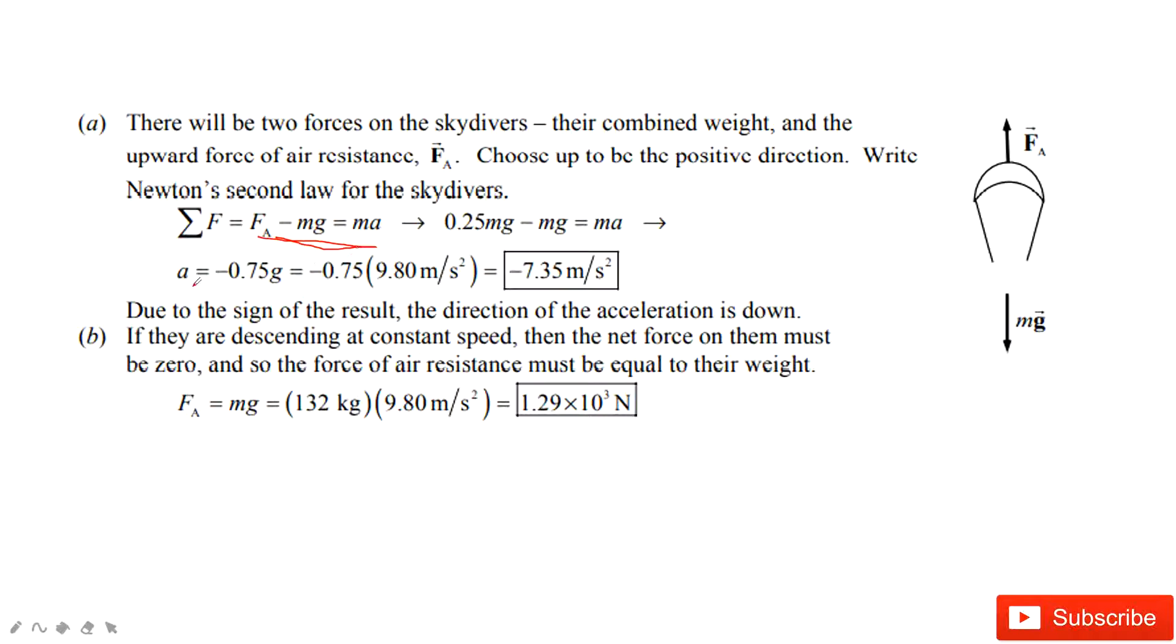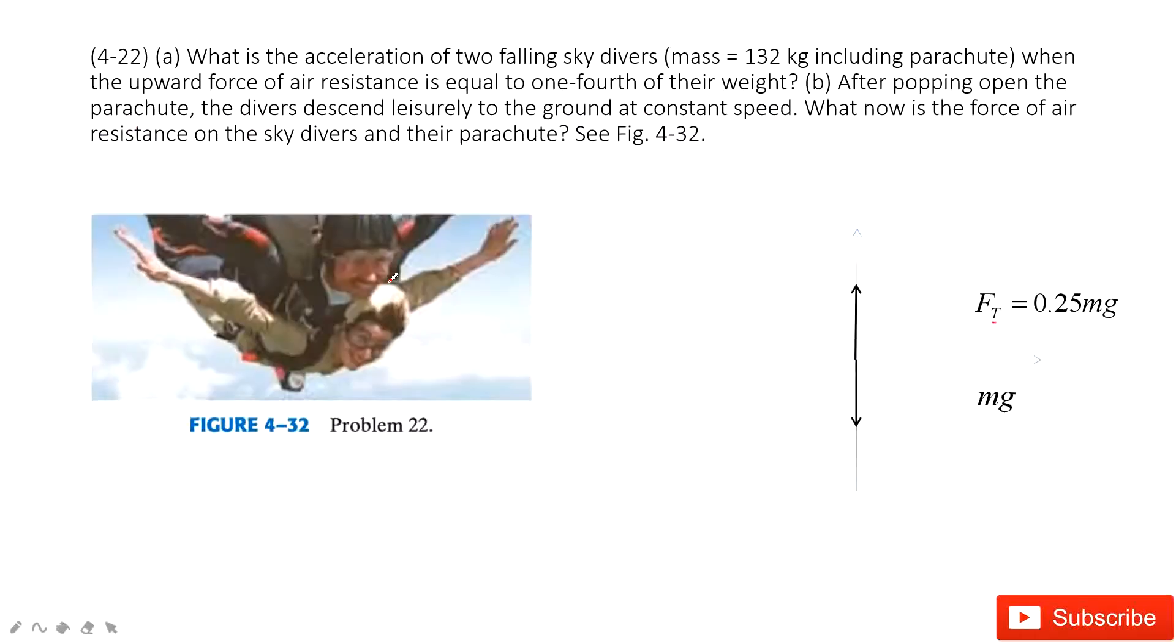So in this one, you get the acceleration. And then we must keep the negative sign there. The negative sign tells us the acceleration is down. So what does that mean? That means that it accelerates down. It speeds up quickly when it moves down.